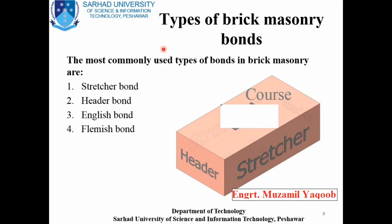Moving on to types of brick masonry bonds — the most commonly used types. Before discussing these bond types, let's review some parts of a brick. As seen in the picture: the top face of the brick is called the course; the side face which is the longer face is called the stretcher; and the shorter face of the brick is known as the header. Knowing these three parts will help us understand the four types of bonds.